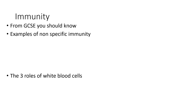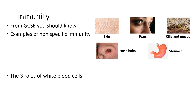From GCSE, you should have been aware of those words. You should also be aware of what specific and non-specific immunity are. For non-specific immunity, go back over your GCSE notes and materials if necessary. Examples include enzymes on the surface of skin, enzymes in tears, and cilia and mucus — where the mucus traps the pathogen and the cilia vibrate to move the mucus away from the lungs and up into the esophagus.